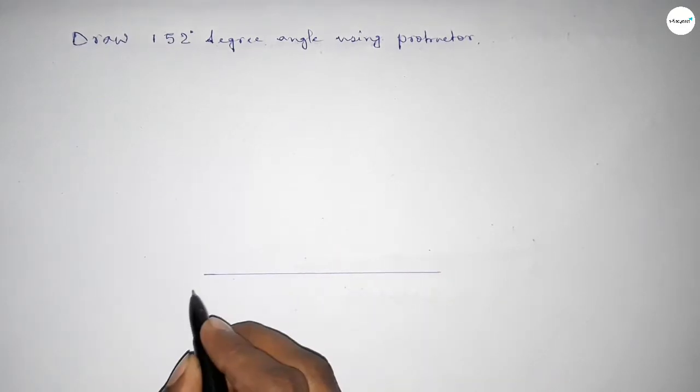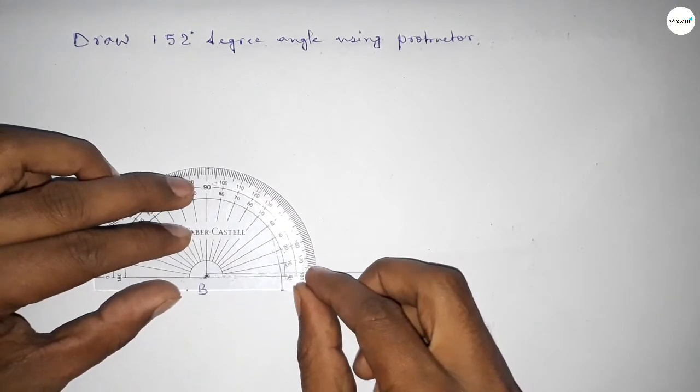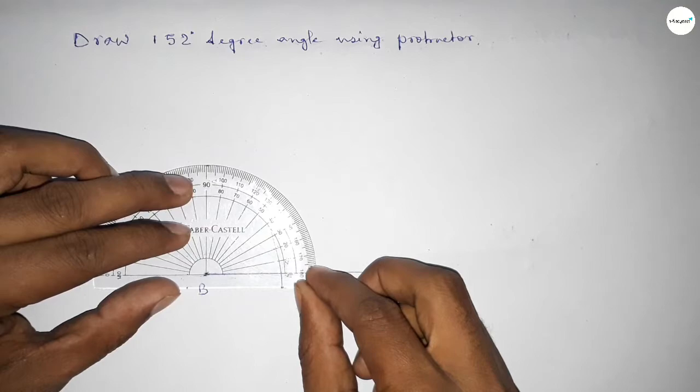Next, taking here point B and here C. Now putting the protractor on the point B perfectly, then counting the angles.